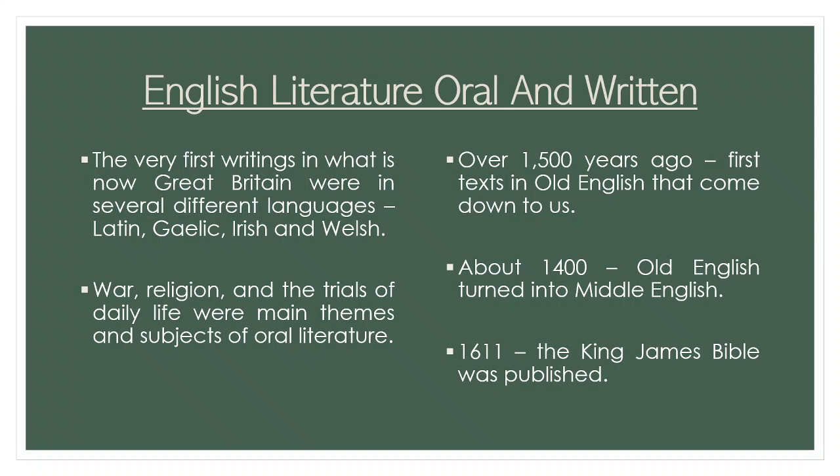It starts with words and with speech. The first literature in any culture is oral. In English, the first signs of oral literature tend to have three kinds of subject matter: religion, war, and the trials of daily life — all of which continue as themes of a great deal of writing. The first texts from more than one and a half thousand years ago come down to us in Old English, showing influences of Norse and Viking, Anglo-Saxon and French invaders, as well as local regional dialects.